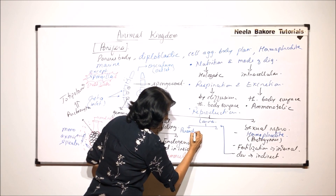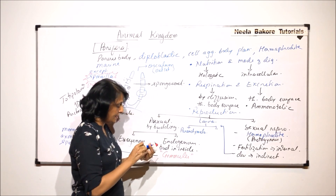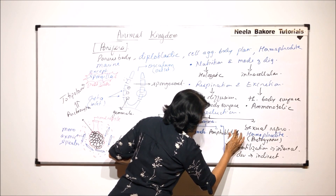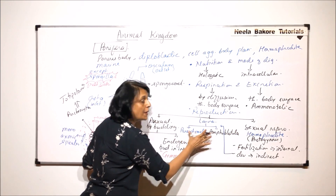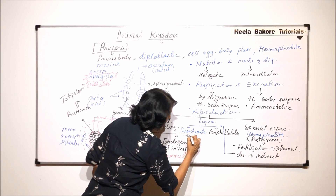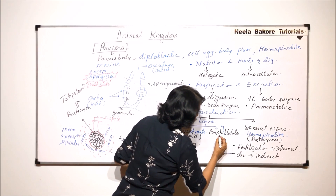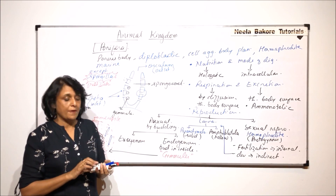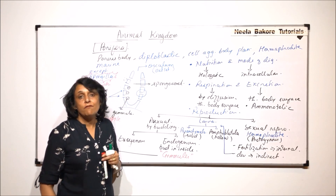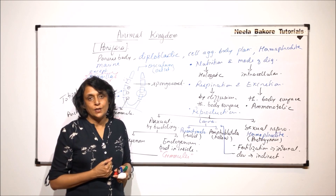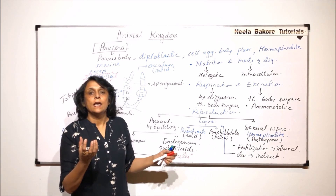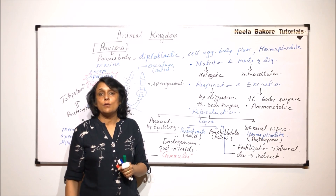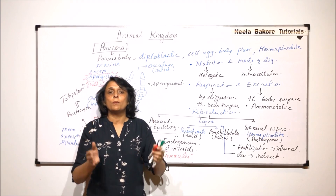The solid larva is called parenchymula and the hollow larva is called amphiblastula. Both are free-floating. Amphiblastula also shows a unique feature: half of its body is flagellated and half is non-flagellated. Scientists believe it is the flagellated part which gets invaginated, forming the spongocoel covered with choanocytes, while the non-flagellated cells form the outer part.